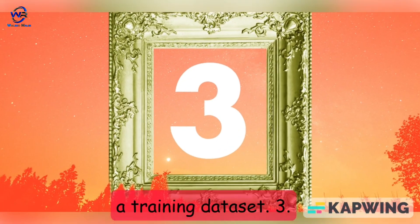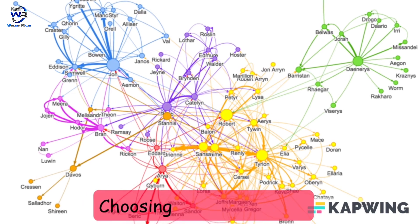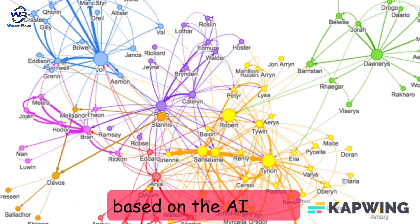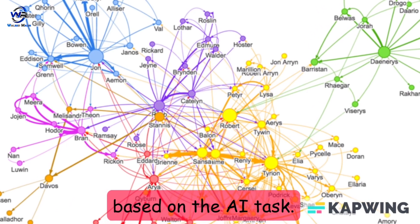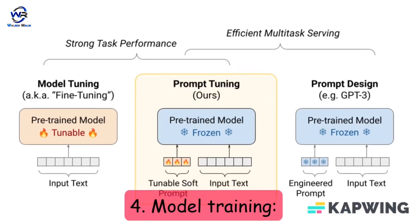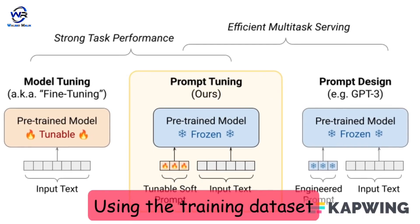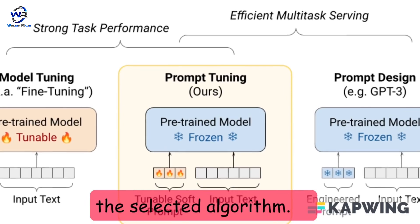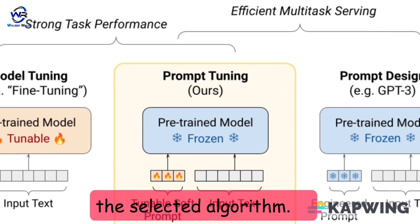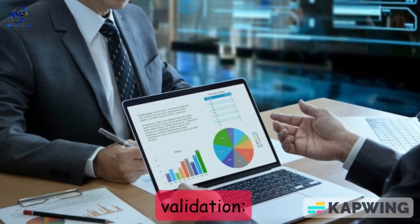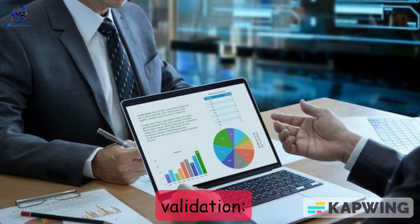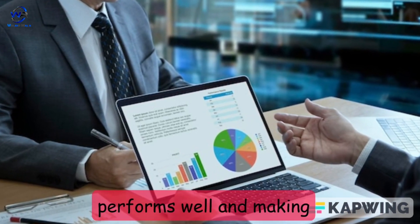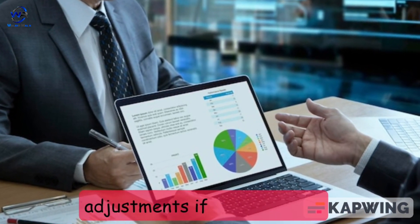Step 3: Algorithm selection — choosing the appropriate machine learning algorithm based on the AI task. Step 4: Model training — using the training dataset to train the AI model using the selected algorithm. Step 5: Model testing and validation — testing the trained model on a test dataset to see if it performs well and making adjustments if necessary.